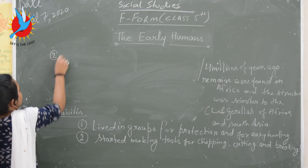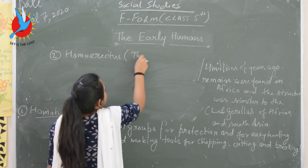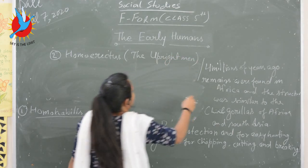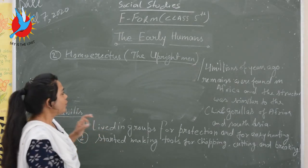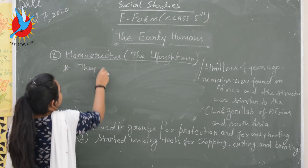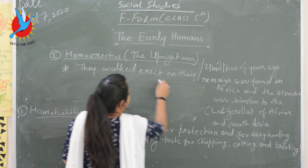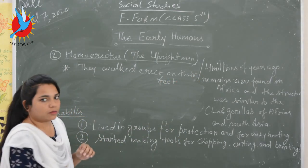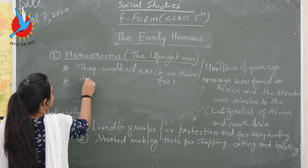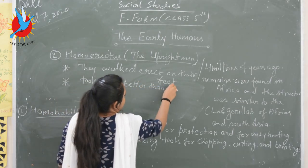The second type of hominid is Homo Erectus. Their other name is the 'Upright Man,' because they walked erect on their feet. They also made tools which were much better than those made by Homo Habilis.